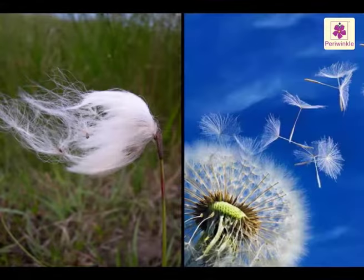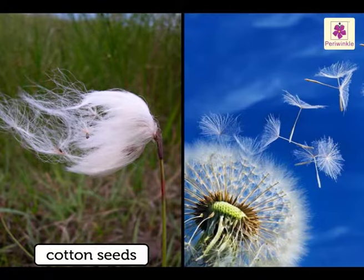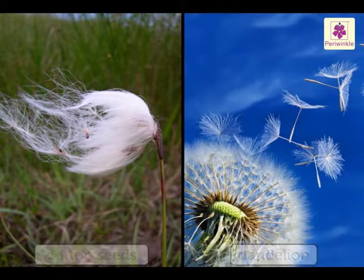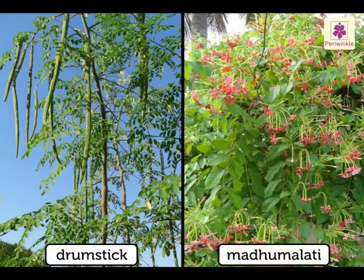Wind: Seeds that are dispersed by wind are small, light and hairy. For example, cotton seeds and dandelion. The hair enables them to fly. The seeds of drumstick and madumalti have thin, papery wings. These help them to float in the air.